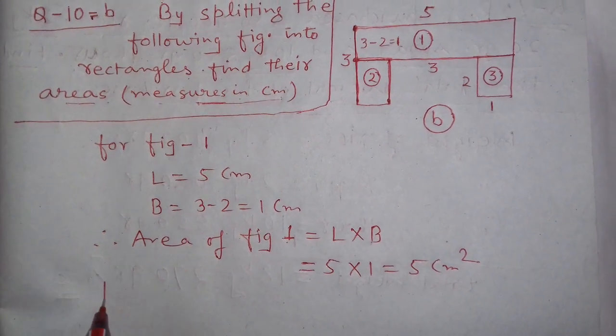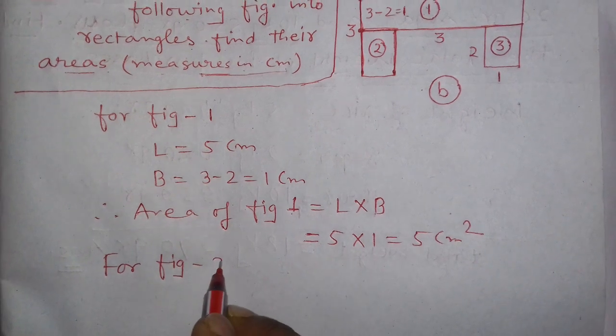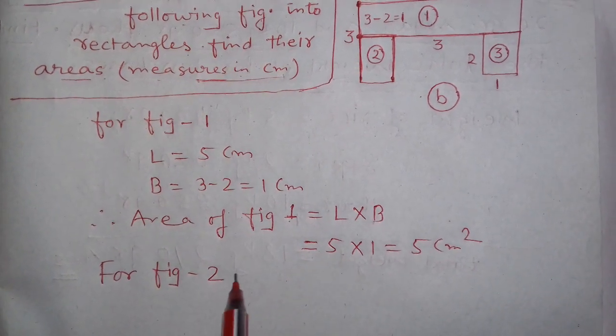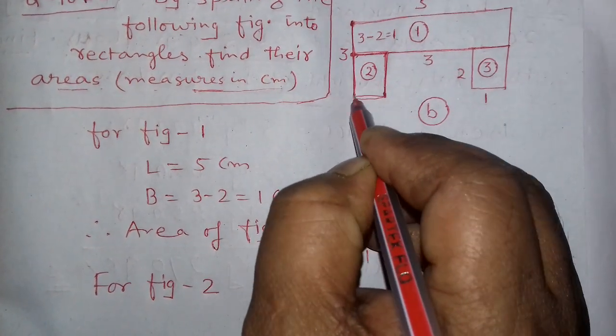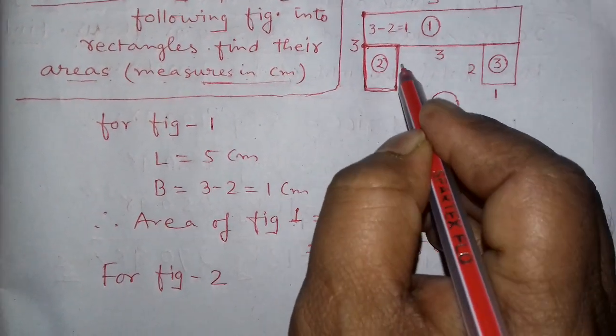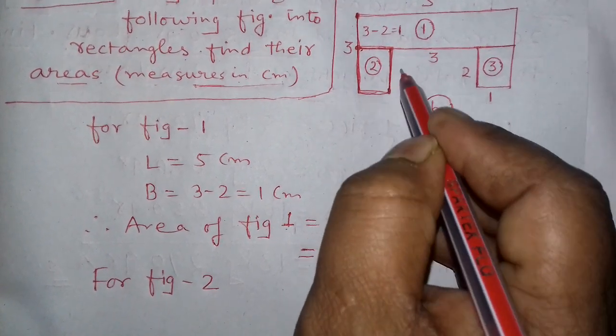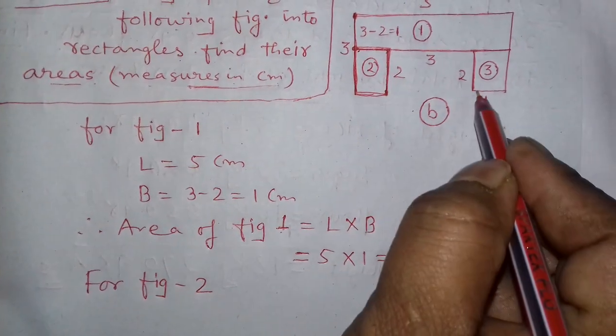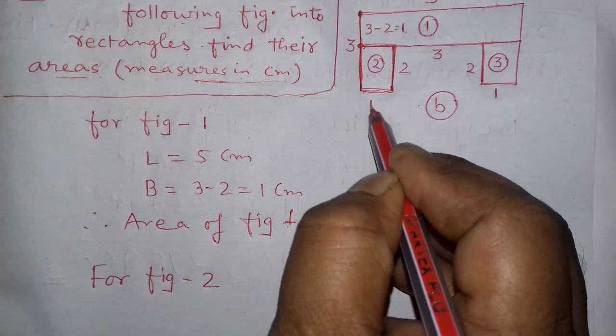Now you find for figure number 2. Figure number 2 and figure number 3 are both similar figures. See this figure number 2. Figure 2 is 2 centimeters, and this figure is 1 centimeter.